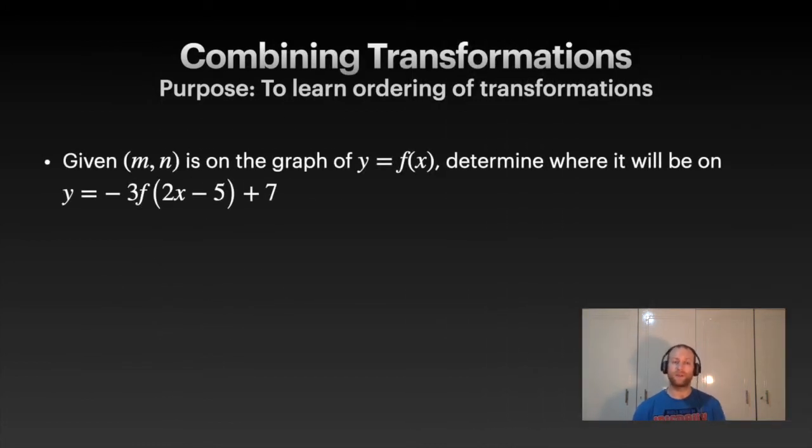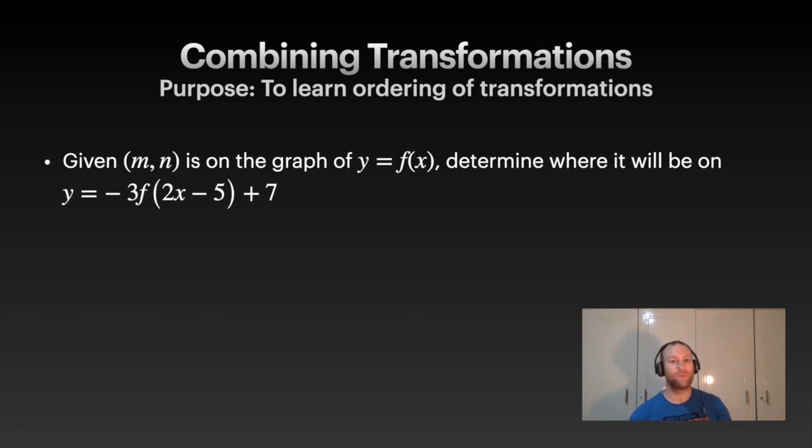Now, we're going to look at something like this. Given a point MN on an original graph, let's figure out where would this point be if we're given this equation. Looking at this, we've got something to do first. Remember, if there's something right beside x, you have to factor it. Always factor that. So, now we've got this expression.